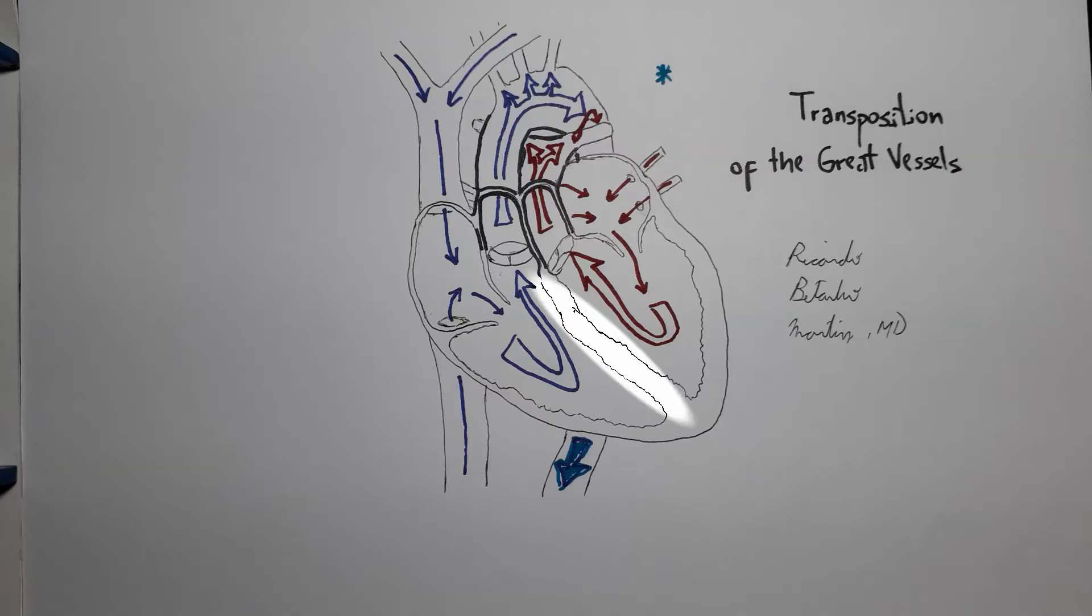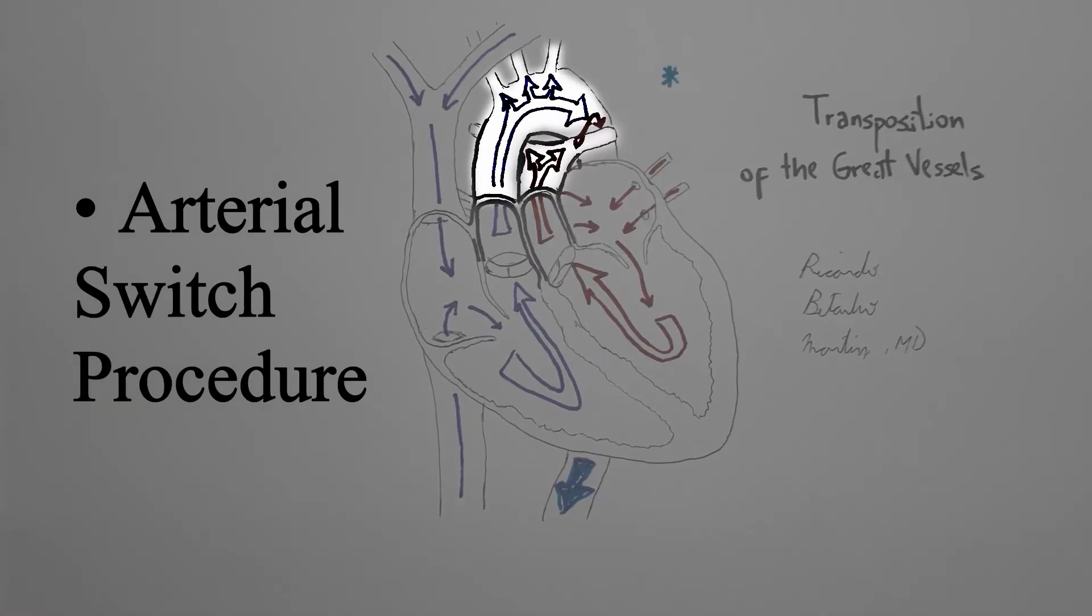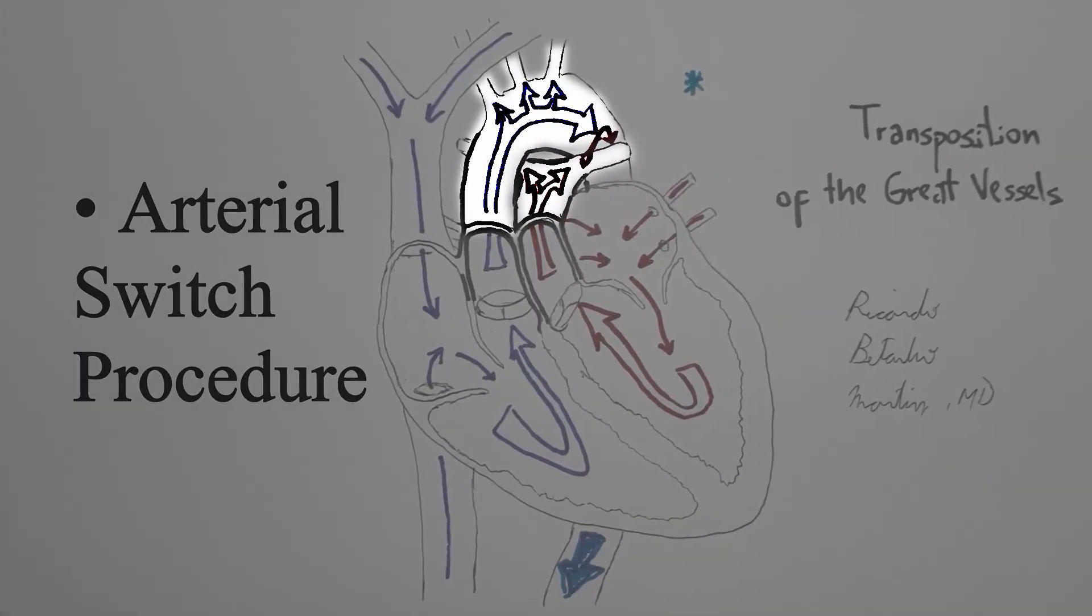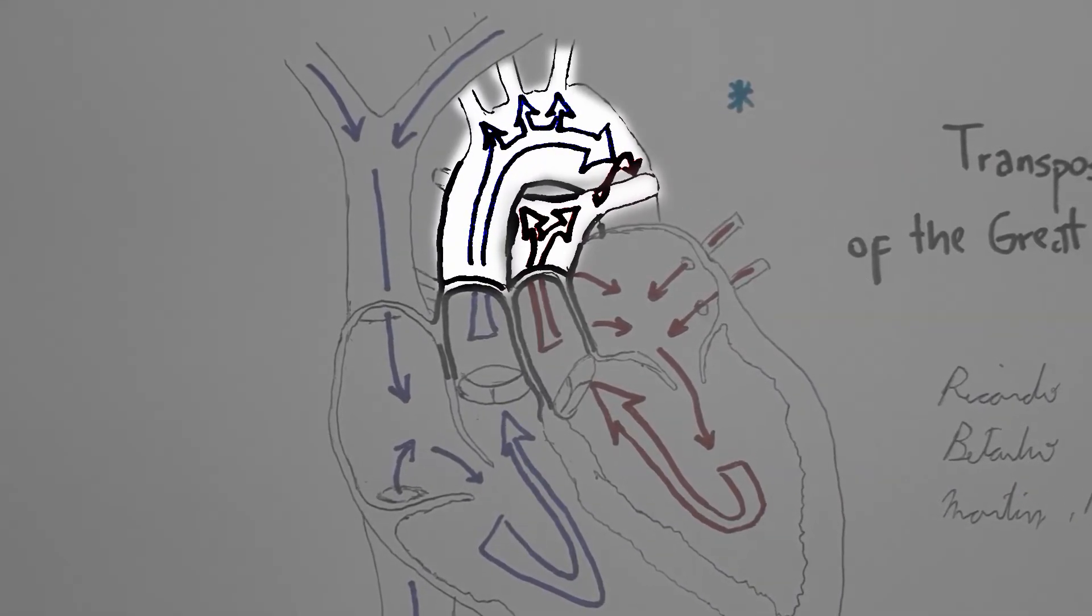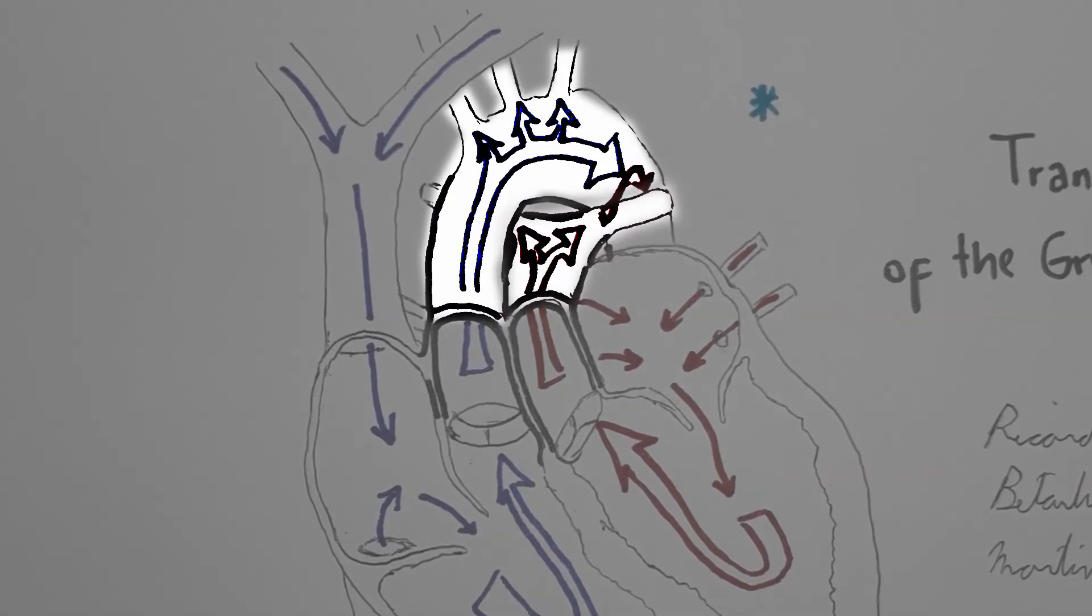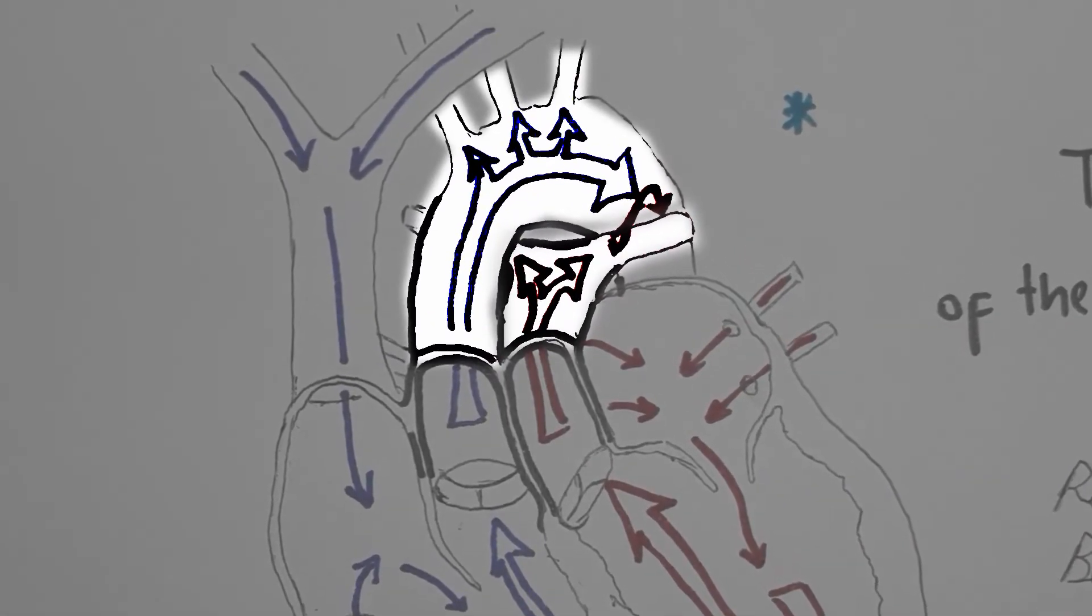When the ventricular septum is intact, the most common operation is an arterial switch procedure, which, in the most simple terms possible, consists essentially in detaching the aorta and the pulmonary trunk and reattaching them in the right places.